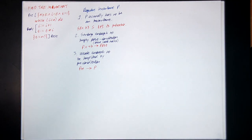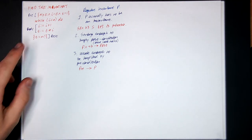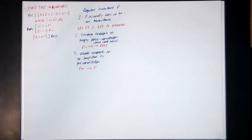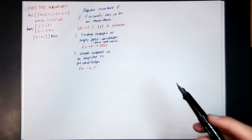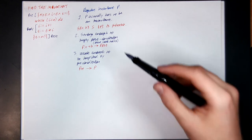If you want to prove a piece of code with a while loop, you need to find an invariant P. What's an invariant? It's a predicate that satisfies three properties.